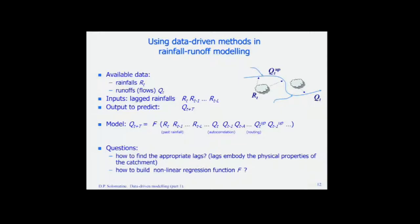Let's consider the use of data-driven methods in rainfall-runoff modeling. The typical situation is: we have rainfall measured in the catchment and we want to assess discharge at a downstream point. For conceptual or distributed models, we build a tank model linking rainfall to runoff with equations and parameters to calibrate. For data-driven models, similarly we build function f with unknown parameters, calibrated using data. As inputs we may take rainfall, lag rainfalls at t-1 to t-L, autoregressive components using past discharge, and upstream discharges for routing.